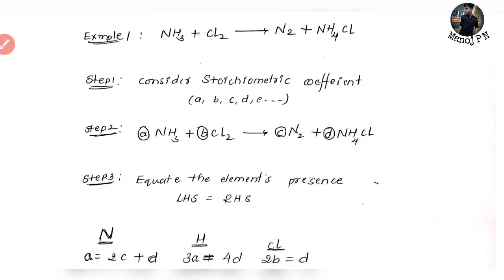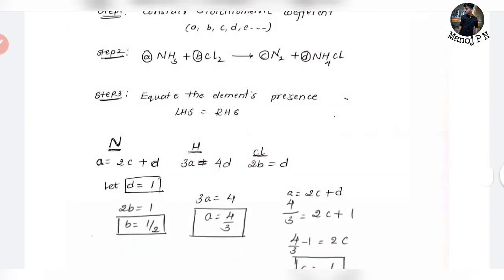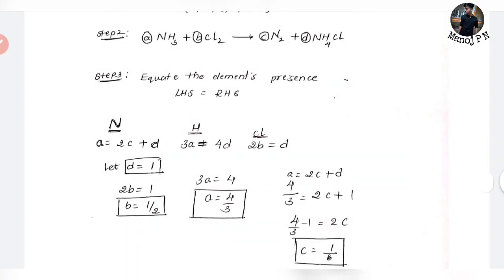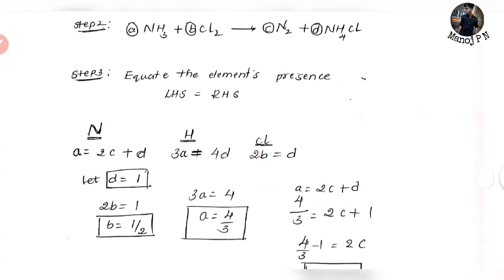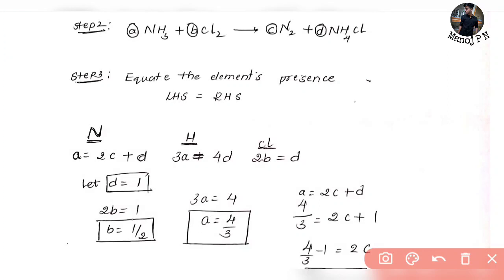So if you want to balance the equation, consider the stoichiometric coefficients. Consider LHS and RHS and equate the elements present on LHS and RHS. So let's balance this — we'll start with nitrogen.